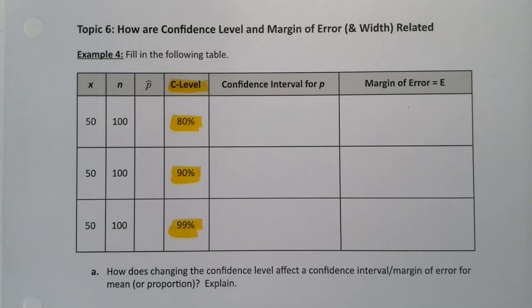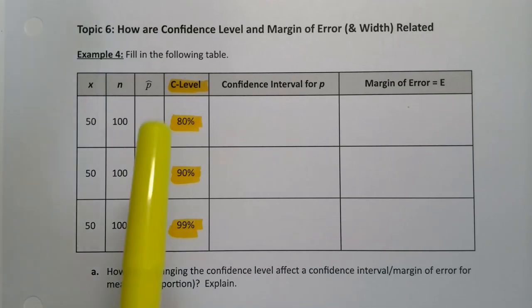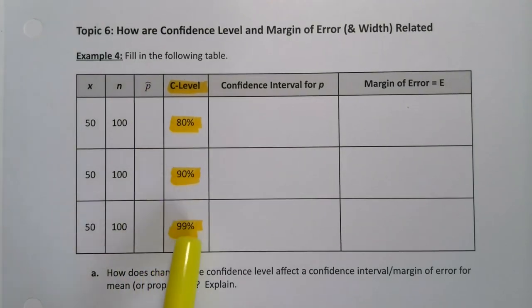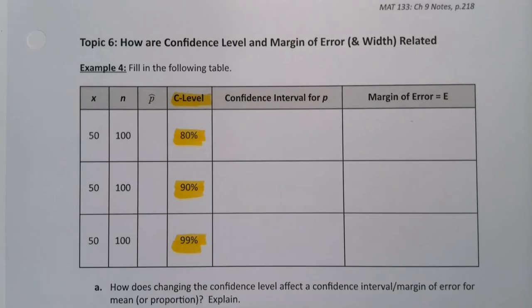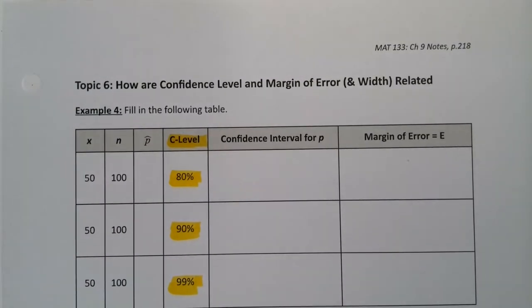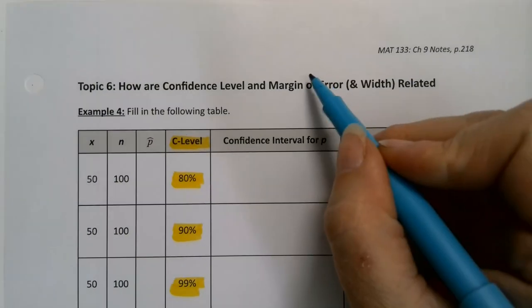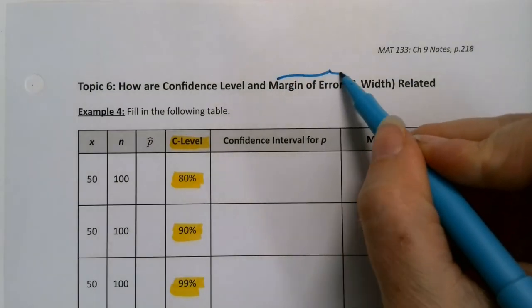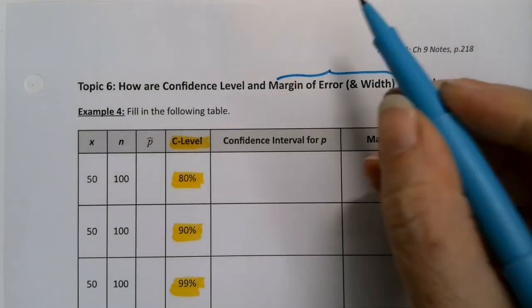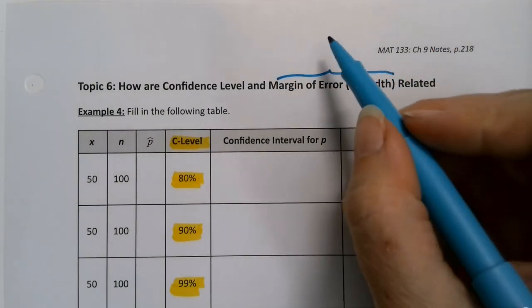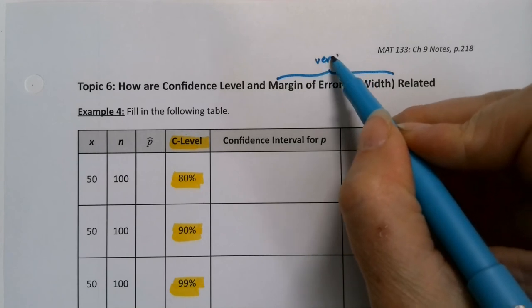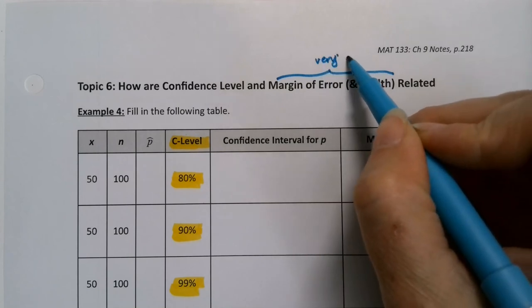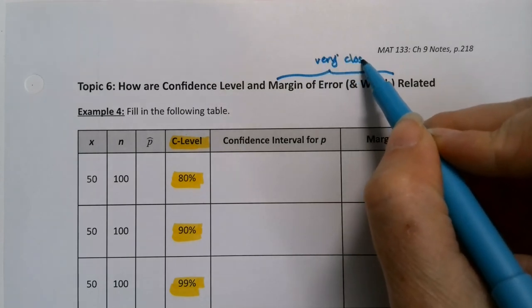For our last topic here, we're going to manipulate the confidence level and see how that affects the margin of error and width. I put those together because they're very, very closely related — when one goes, the other one goes.